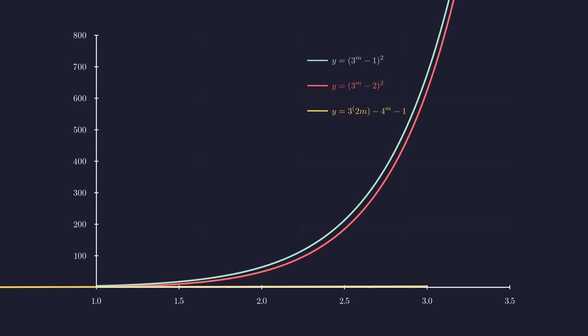Here's the strategy. We'll show that our expression gets trapped between two consecutive perfect squares. This graph makes the idea crystal clear. The upper curve shows 3 to the m minus 1 squared, the lower curve shows 3 to the m minus 2 squared, and these points show our actual expression. See how for m equals 3, our point sits strictly between the two curves? That means it can't be a perfect square. Now let's prove this rigorously.